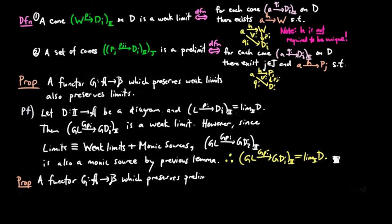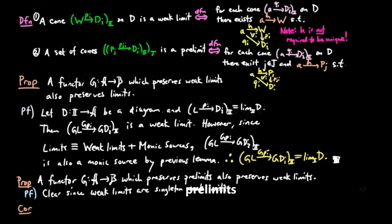A functor G which preserves pre-limits also preserves weak limits. This follows since weak limits are singleton pre-limits. And as a corollary, we have a functor which preserves pre-limits preserves limits. And that concludes this section.